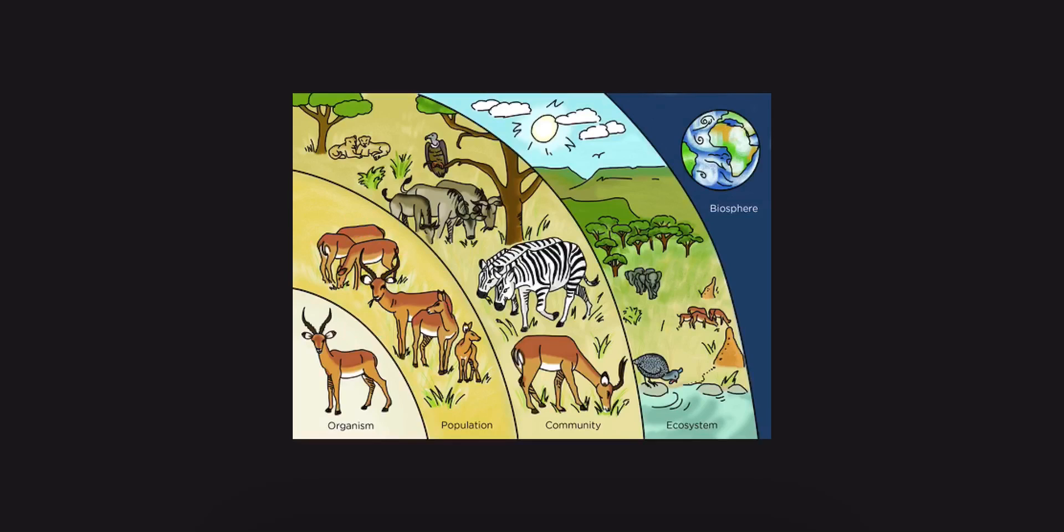Our next step that we are going to look at is a community. A community is all of the living parts of an ecosystem. So here is a picture of an antelope, but there is also zebras, vultures, lions. All of these animals are living. Also, an important thing to note with our community, our plants are living as well. So here we have a tree and grass. All of those things are living.